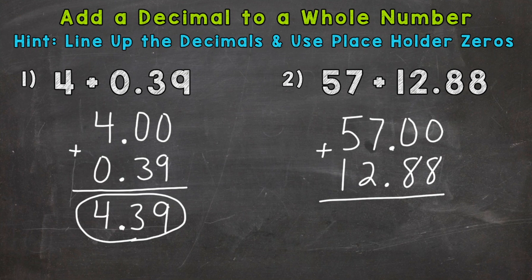So now we just add zero plus eight is eight. Zero plus eight is eight. Decimal goes straight down. Seven plus two is nine. And five plus one is six. So we get 69 and 88 hundredths there.